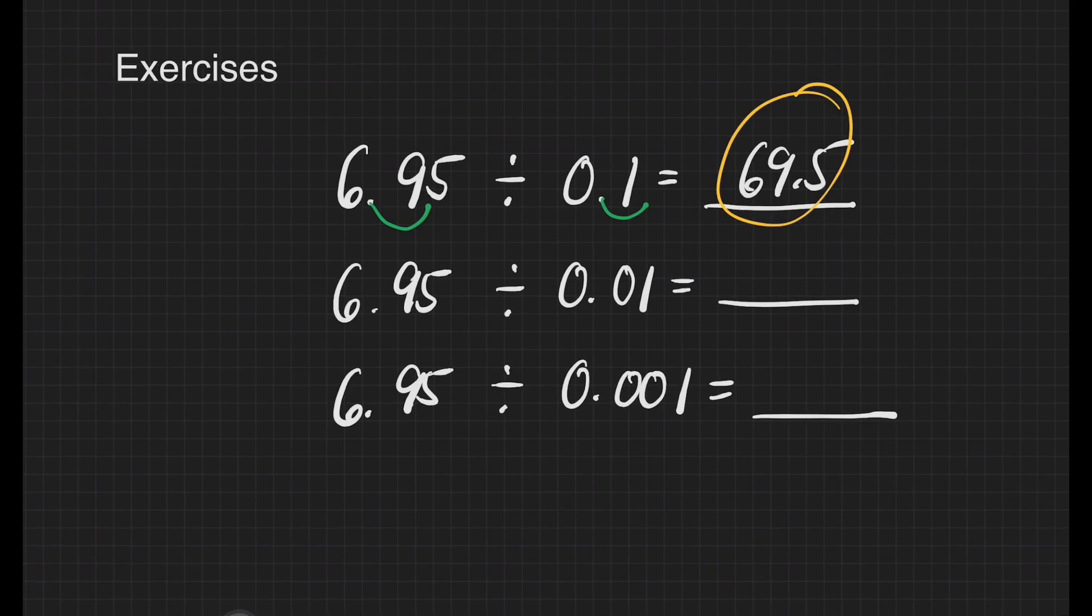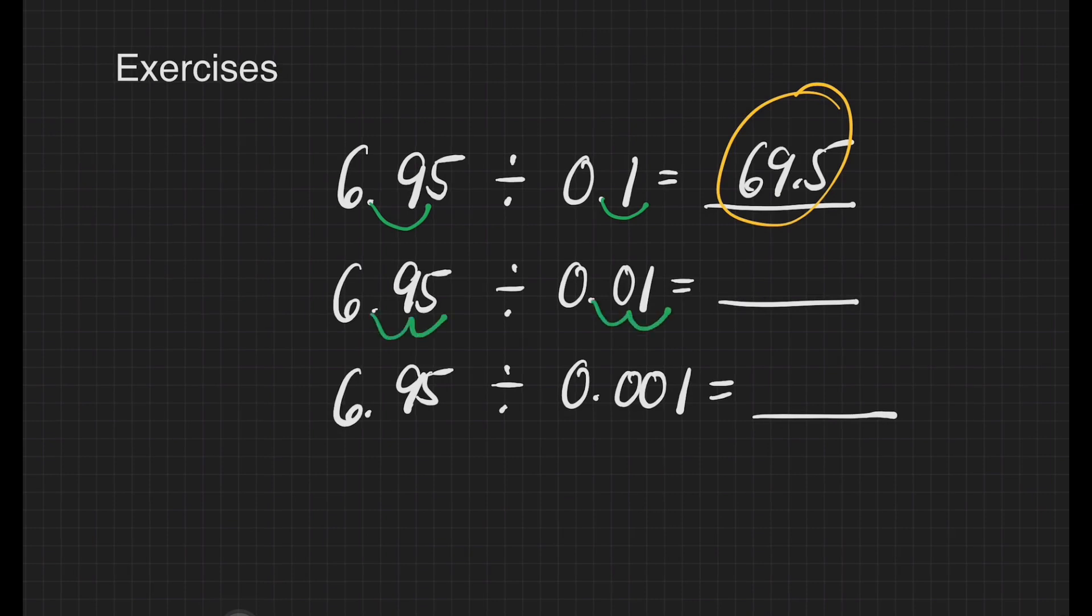For the second question, we have 6 and 95 hundredths divided by one-hundredth. We will just move two decimal places for both divisor and dividend.